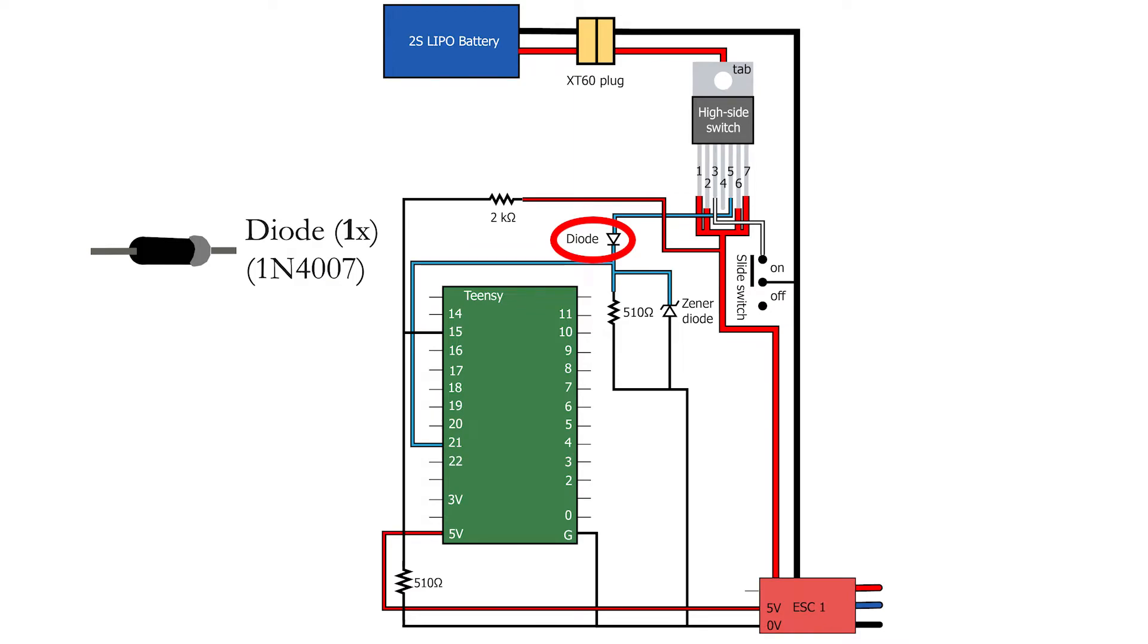Notice that a normal diode is placed as well in front of the circuit. Because the Zener diode does not protect the Teensy when accidentally reversing the battery, the diode lets you protect the Teensy from any negative voltages.